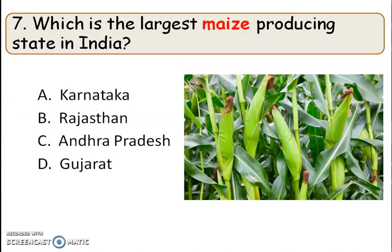Which is the largest maize producing state in India? The right answer is option C, Andhra Pradesh. Andhra Pradesh is the largest maize producing state in India.